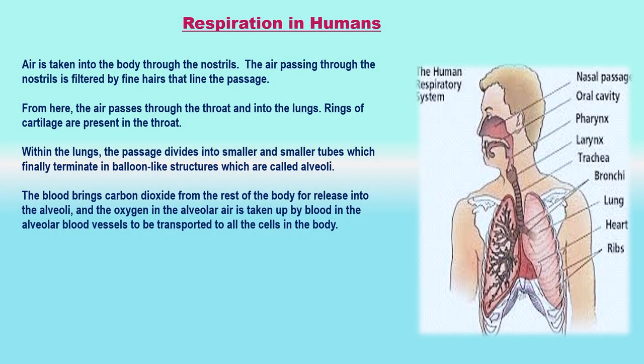Respiratory system in humans: The main organs of the human respiratory system are nose, nasal passage, trachea, bronchi, lungs, and diaphragm. The air for respiration is drawn into our body through the nostrils present in the nose. This air then goes into the nasal passage, which is separated from the mouth cavity and is lined with fine hair and mucus. The part of the throat between the mouth and windpipe is called the pharynx. From the nasal passage, air enters the pharynx and then goes into the windpipe. The trachea runs down the neck and divides into two smaller tubes called bronchi at its lower end.